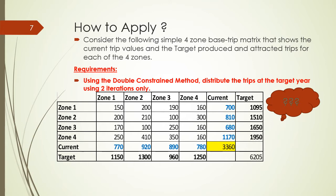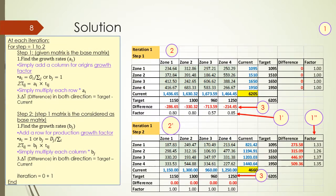This illustrative slide shows how to calculate using the double-constraint factor. In iteration one, step one, we calculate the factor considering the destination. The factor of 0.8 is calculated by dividing the target by the current, and the difference is target minus current. We do the same for the next columns. This factor is destination-based because we calculated it considering the destination, not the origin as in the previous slide.